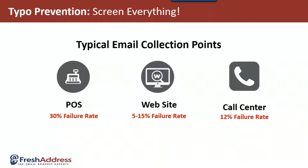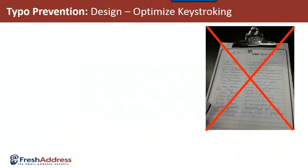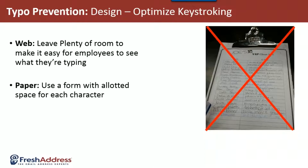One thing that you really want to do is make sure that you screen everything. A real simple way to prevent typos from entering your system — to prevent you from wasting those creative dollars, those dollars on deployment — is to button up your keystroking process. There are a number of ways you can do this to reduce those big percentages we saw on the past slide.